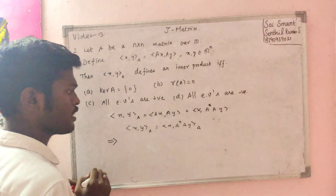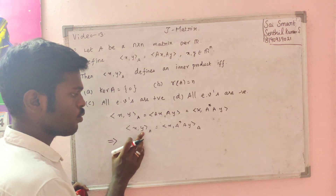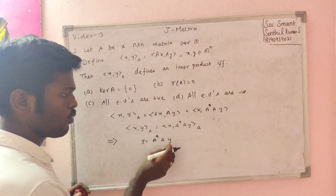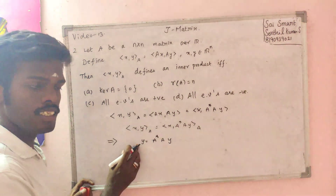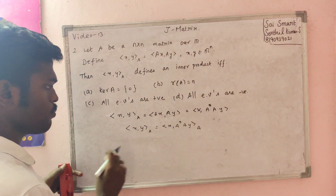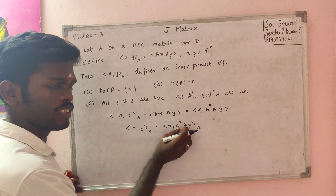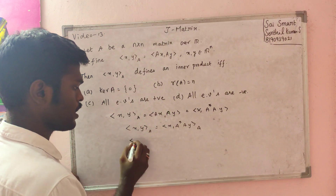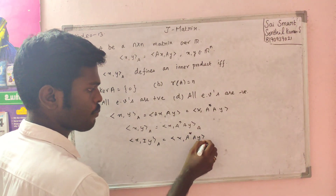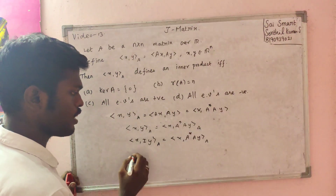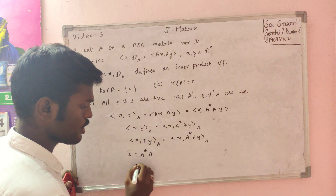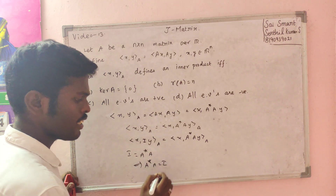This implies A-star A equals I. Comparing both sides: x, y positions are replaced with A-star A. This implies A-star A equals I, which means A is a unitary or orthogonal matrix.